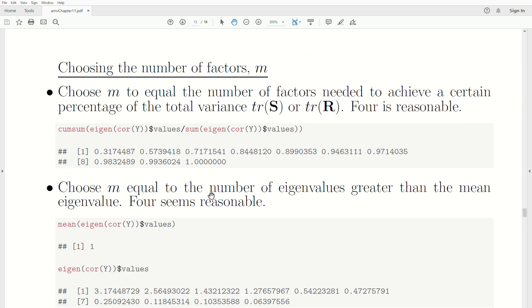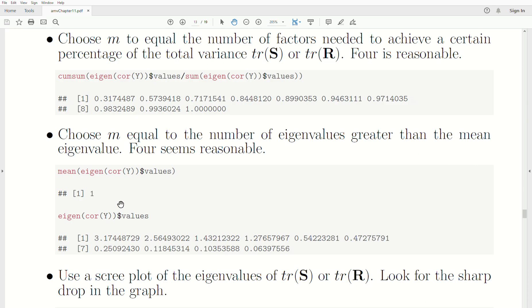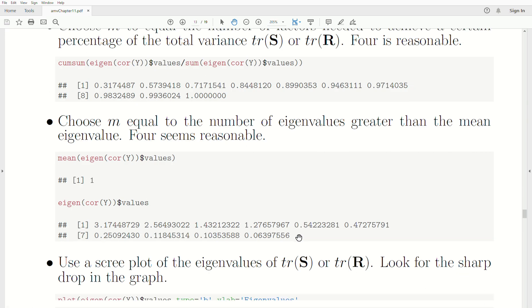We could also choose M to equal the number of eigenvalues greater than the mean eigenvalue. Four seems reasonable using this approach. If we look at the eigenvalues associated with the correlation matrix, find the mean or the average is one. Then we just print out the eigenvalues and count how many are greater than the mean. It's one, two, three, four are greater than the mean eigenvalue. So four seems appropriate again.